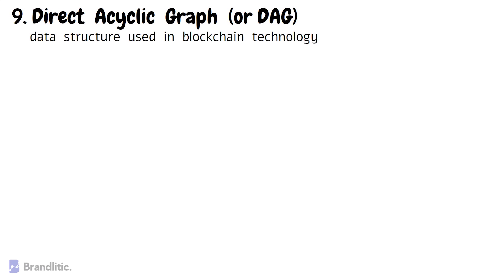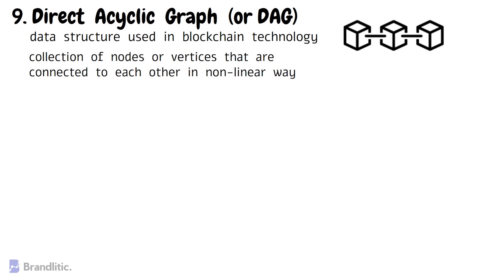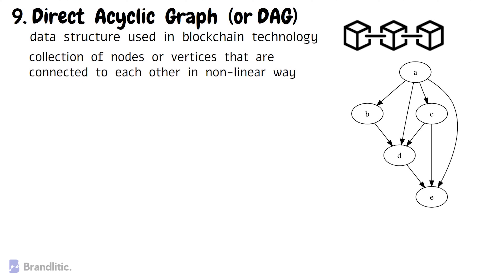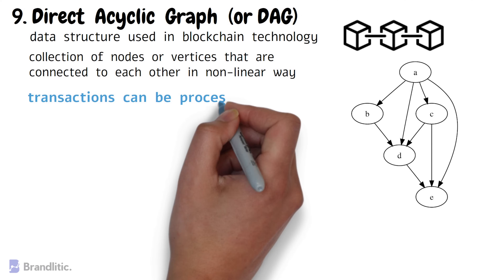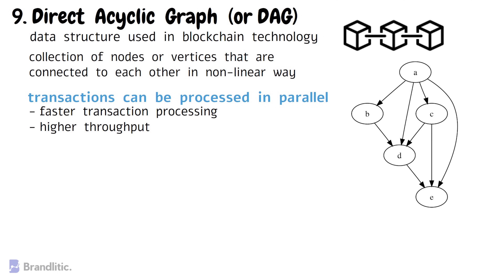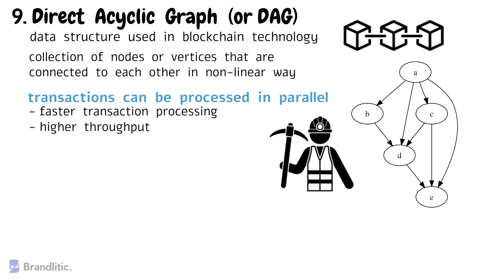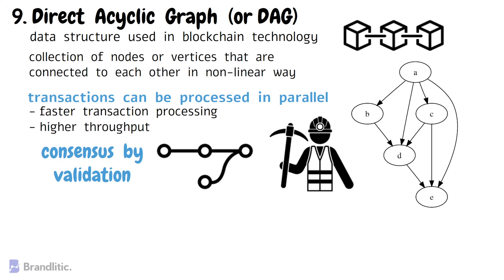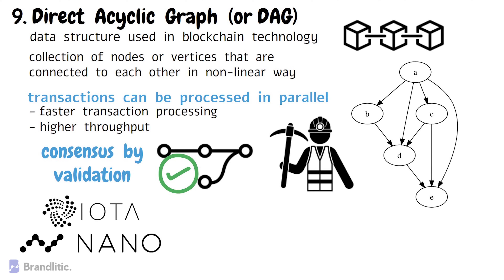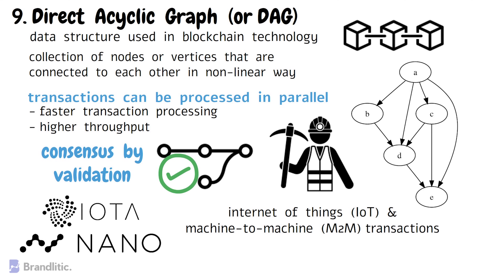Number nine: Directed Acyclic Graphs, or DAG. DAG is a data structure used in blockchain technology that differs from traditional blockchains — unlike a linear chain of blocks, a DAG is a collection of nodes or vertices connected to each other in a non-linear way. Each node in a DAG represents a transaction and contains references to previous transactions. The beauty of DAG is that transactions can be processed in parallel, allowing for faster processing times and higher throughput. There is no need for miners or validators to compete; instead, nodes validate transactions and add them to the DAG, and other nodes verify them before confirmation — a process known as consensus by validation. DAG-based networks such as IOTA and NANO are often used in applications like IoT and machine-to-machine transactions where fast processing and high scalability are essential.